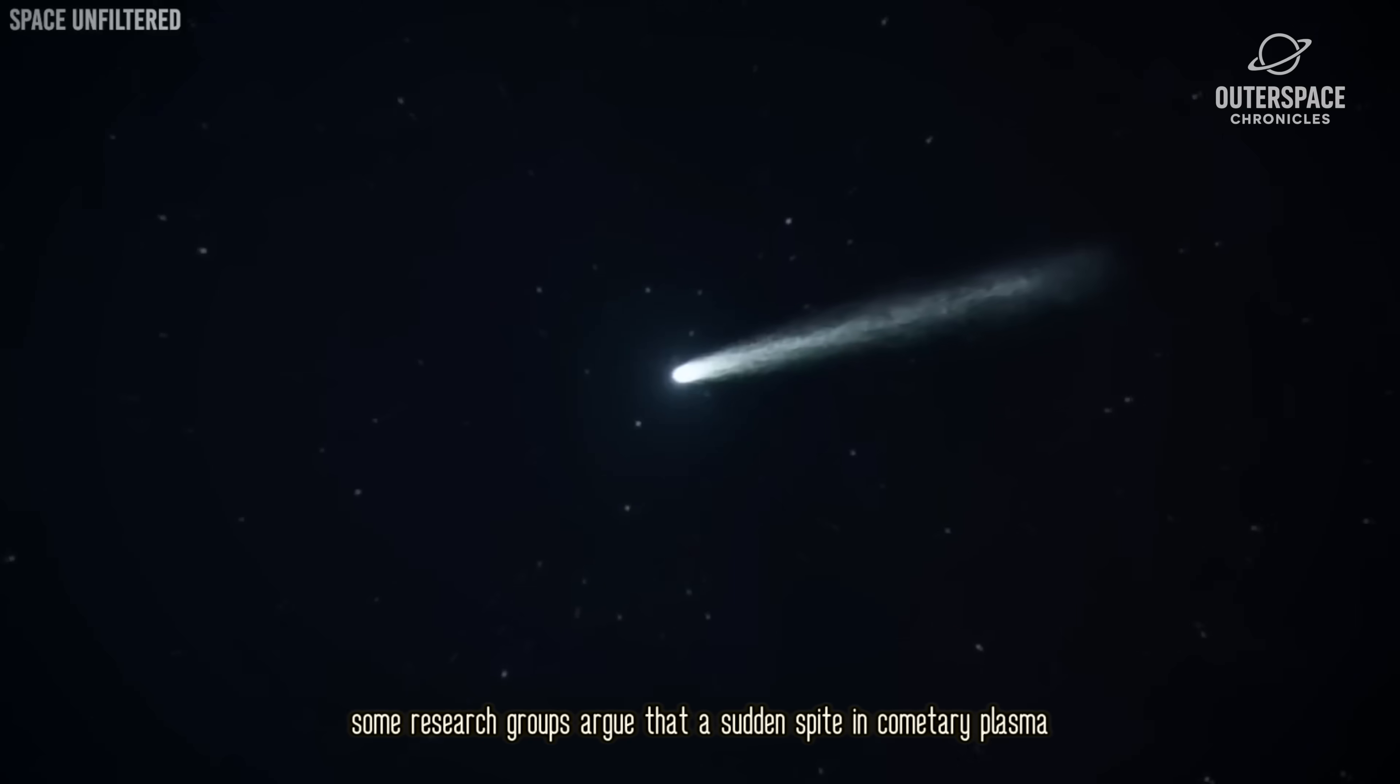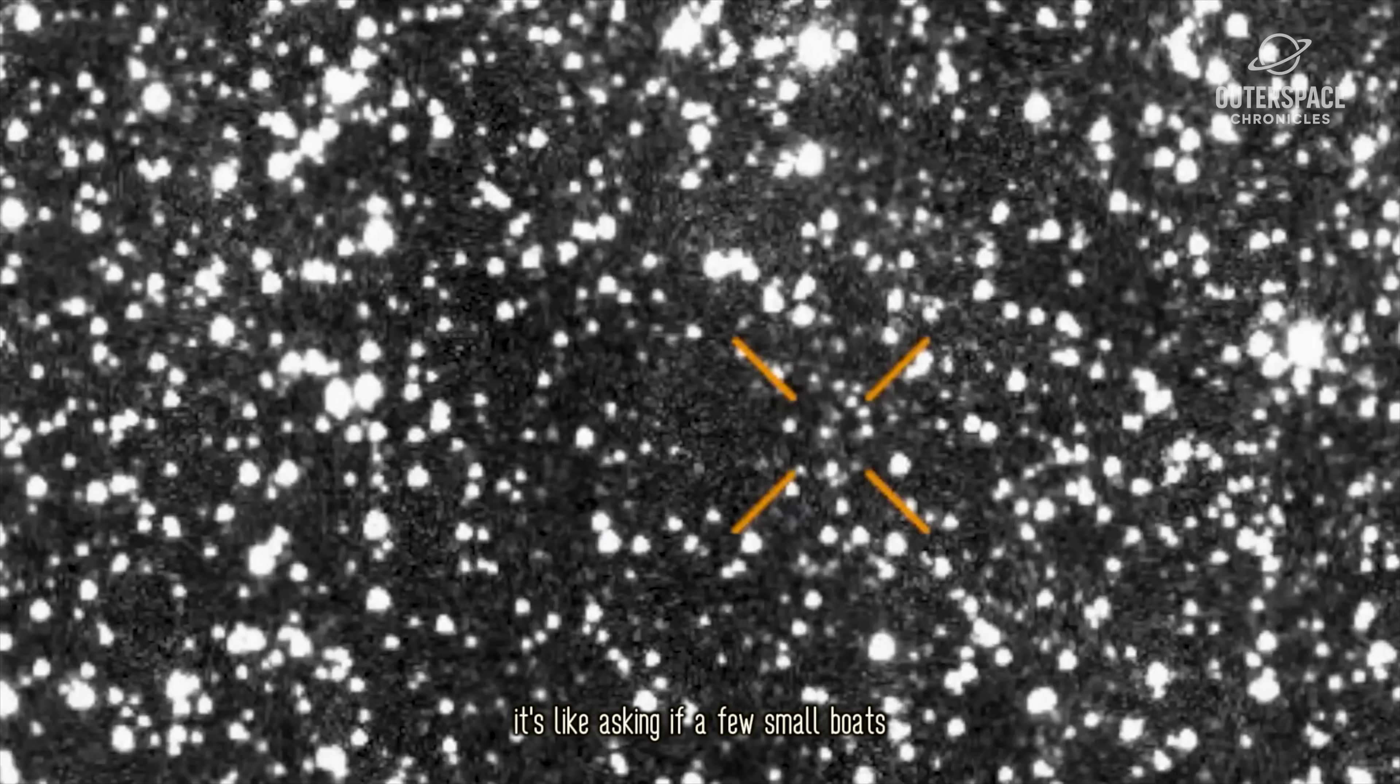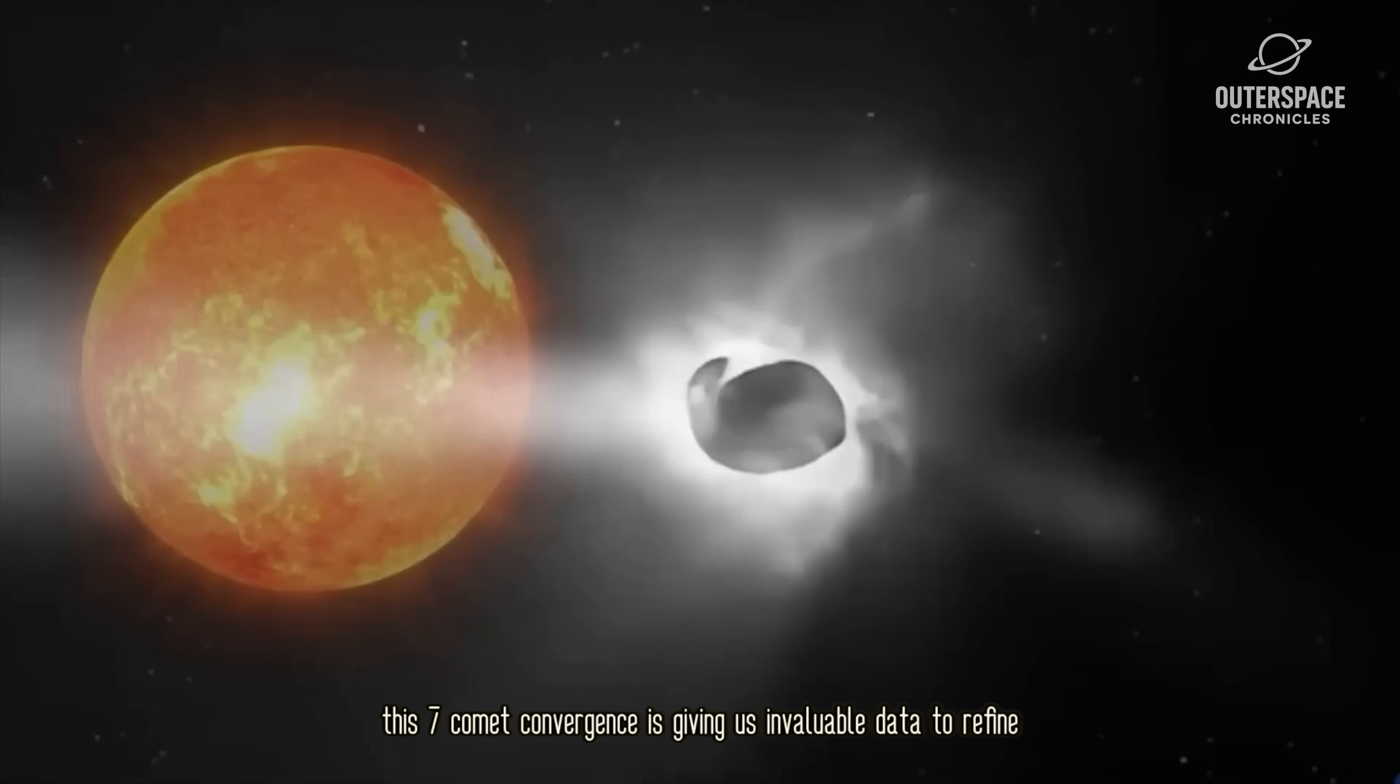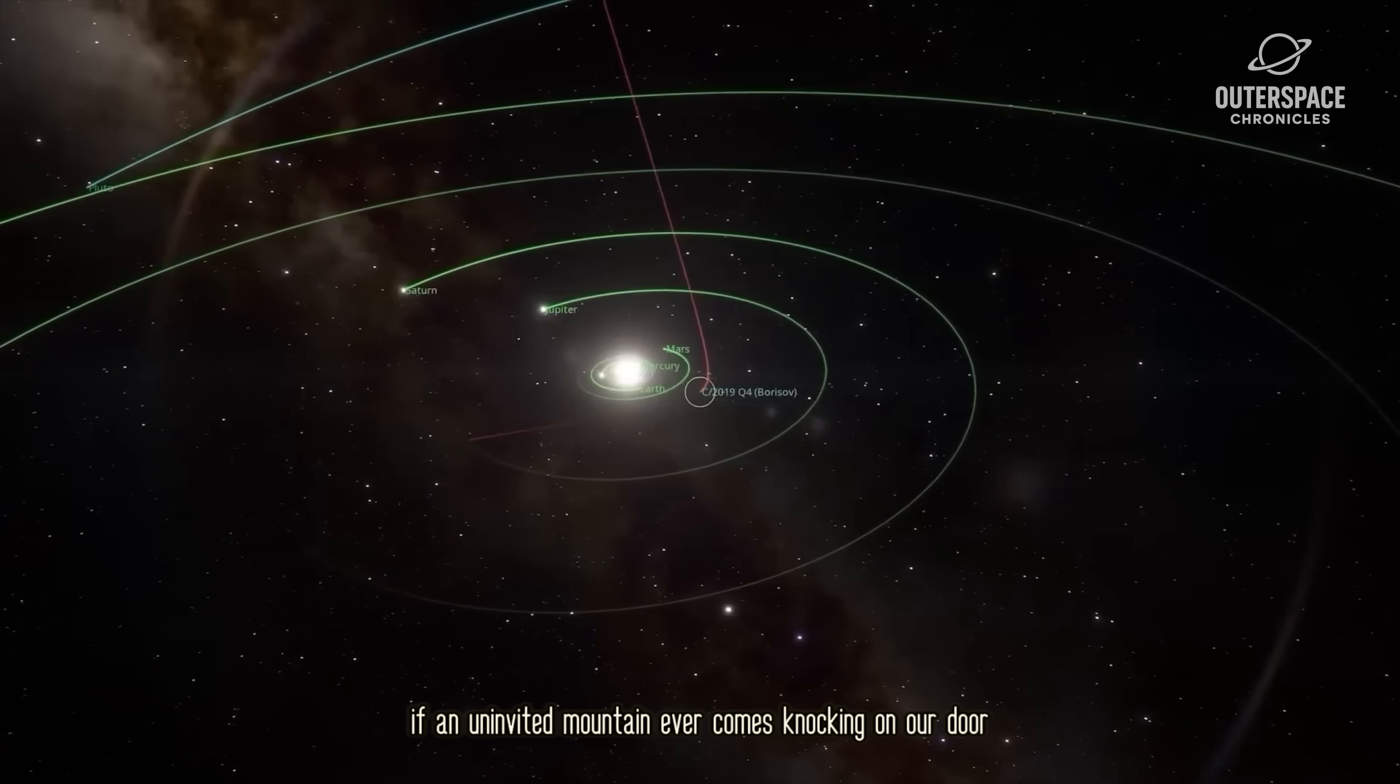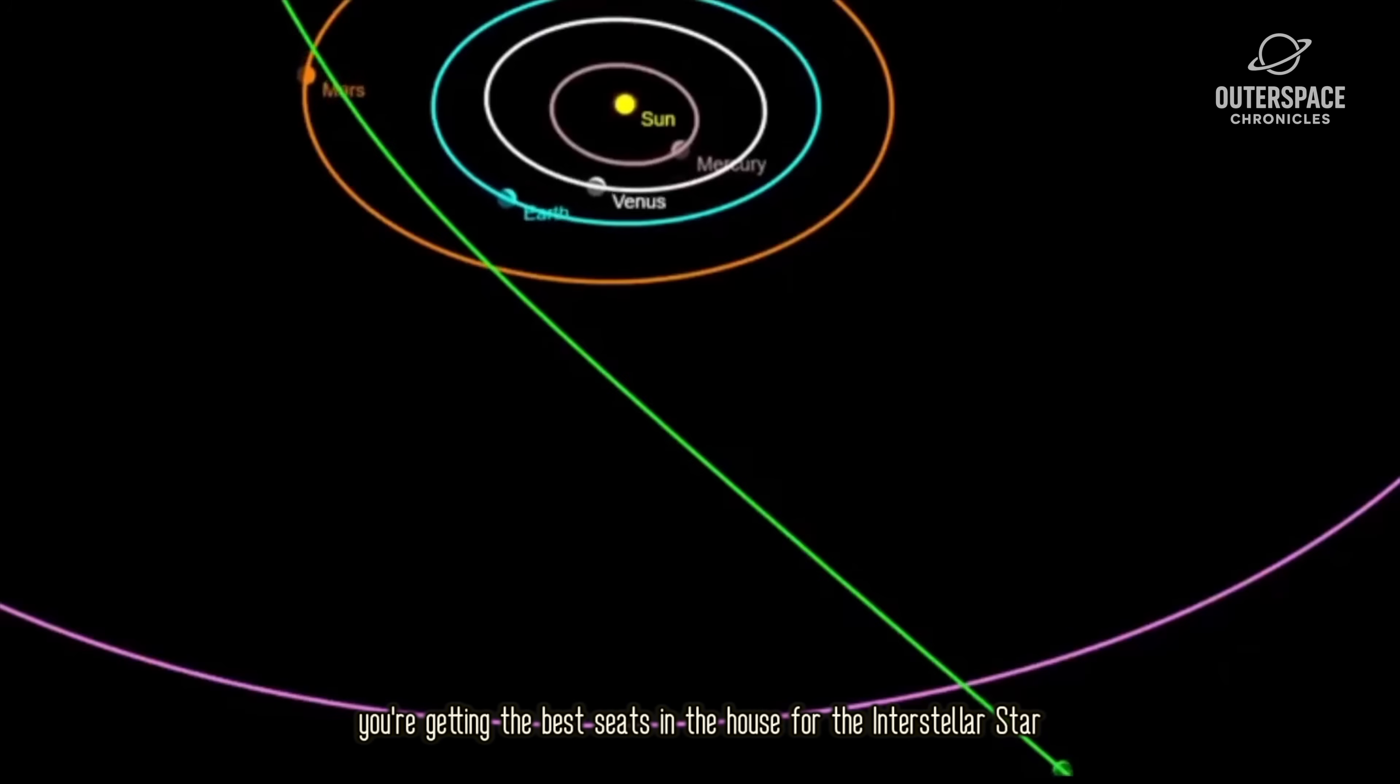Solar physicists are watching this swarm with a mix of anticipation and unease, because some research groups argue that a sudden spike in cometary plasma, especially from this many comets, could subtly nudge the Sun toward more intense outbursts. This seven-comet convergence is giving us invaluable data to refine the toolkit we'll need if an uninvited mountain ever comes knocking on our door.